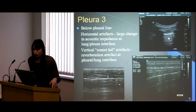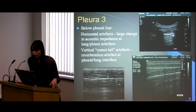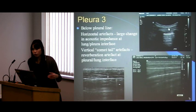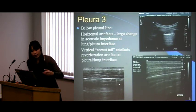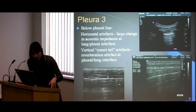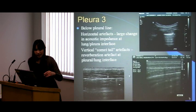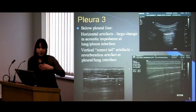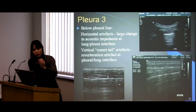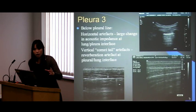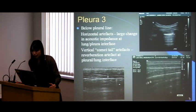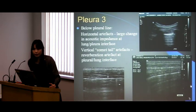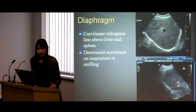Below the pleural line you get these artifacts — reverberation artifacts. The really bright echogenic line with changing acoustic impedance from soft tissue to air gives you these mirror-like artifacts at the lung-pleura interface. You've also got these little echogenic comet tail artifacts — basically the interlobular septa close to the pleura throwing off reverberation artifacts, approximately about seven millimeters apart normally.